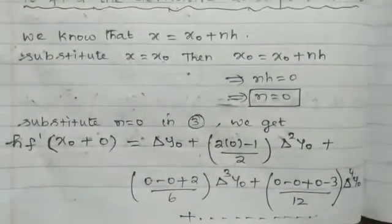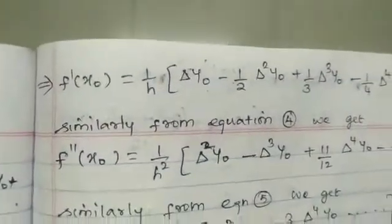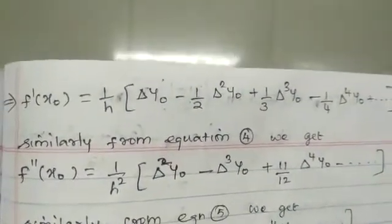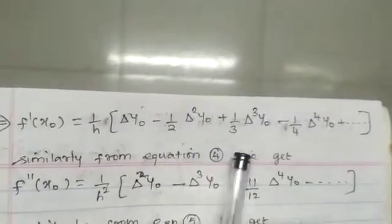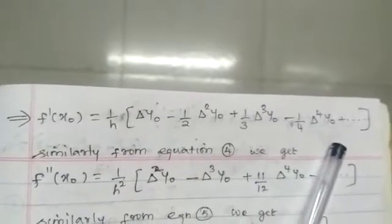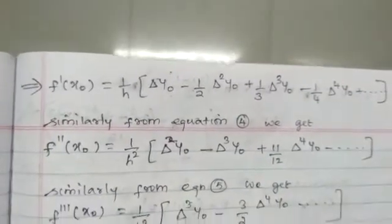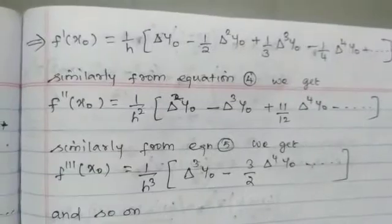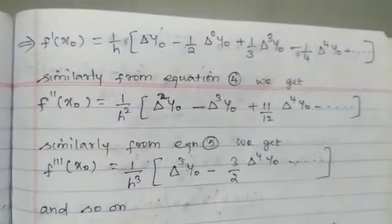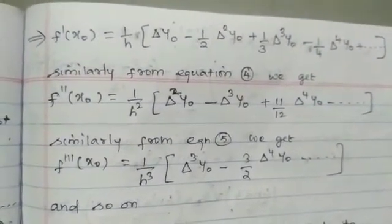Our aim is to find the derivative at x = x₀. Substituting n = 0, we get: f′(x₀) = (1/h)[Δy₀ − (1/2)Δ²y₀ + (1/3)Δ³y₀ − (1/4)Δ⁴y₀ + …]. Similarly, f″(x₀), f‴(x₀), f⁽⁴⁾(x₀), etc., can be found.